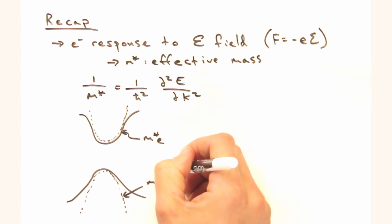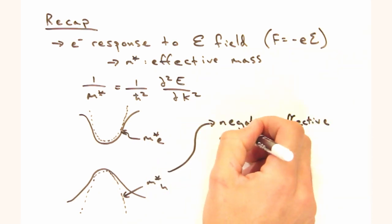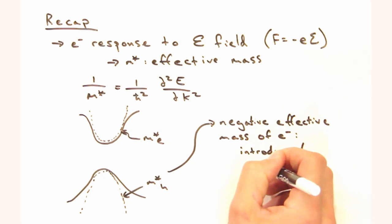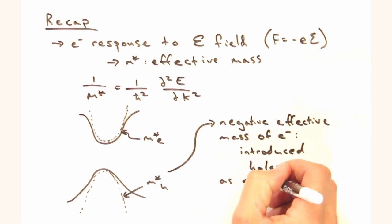Then everything got wacky when we went to the valence band edge. The negative effective mass of electrons near the band edge yield the opposite behavior in an electric field than we might classically expect.